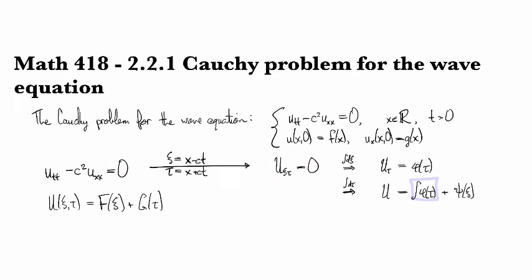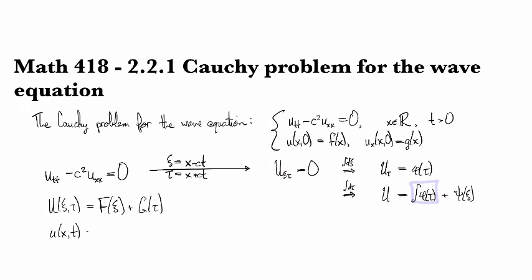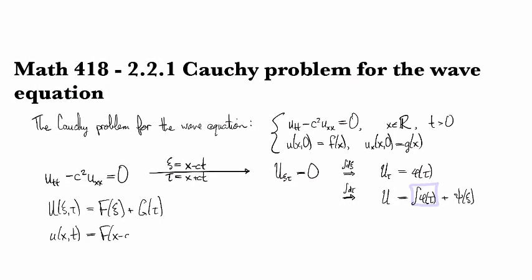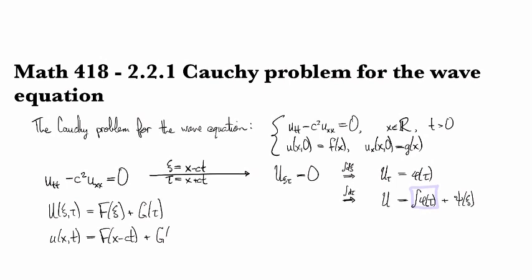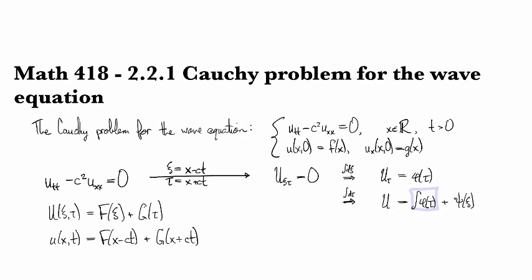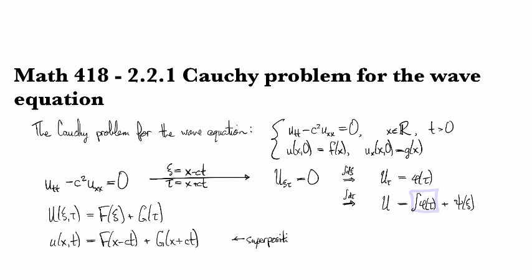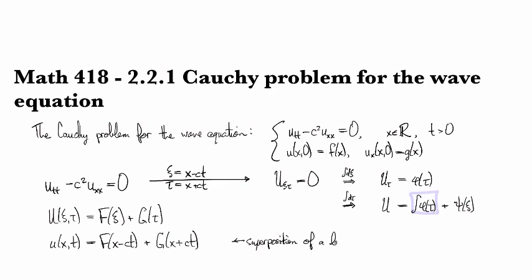All right, and then converting back into our original coordinates, we have that u of x, t is going to be F of x minus ct plus G of x plus ct.